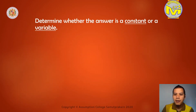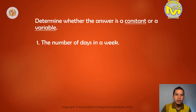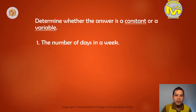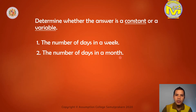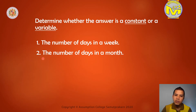Now let's determine whether it is a constant or a variable. Remember, constant has a fixed value — it doesn't change. Variable has different values. So the number of days in a week remains 7 forever, right? So we can call it constant. Number 2: the number of days in a month. Does it change? Well, except February — February changes every leap year. Sometimes it is 28, sometimes it is 29. So that's the only month that is changing, but other months are constants. So majority are constants.